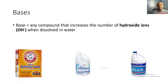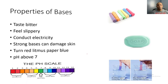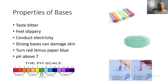Now let's look at bases. Bases are any compound that increases the number of hydroxide ions, or OH−, when dissolved in water. Common household bases include baking soda, ammonia, and bleach. Baking soda can be used for cooking or brushing our teeth, but we would never use ammonia or bleach for those purposes because ammonia and bleach are very strong and powerful bases.